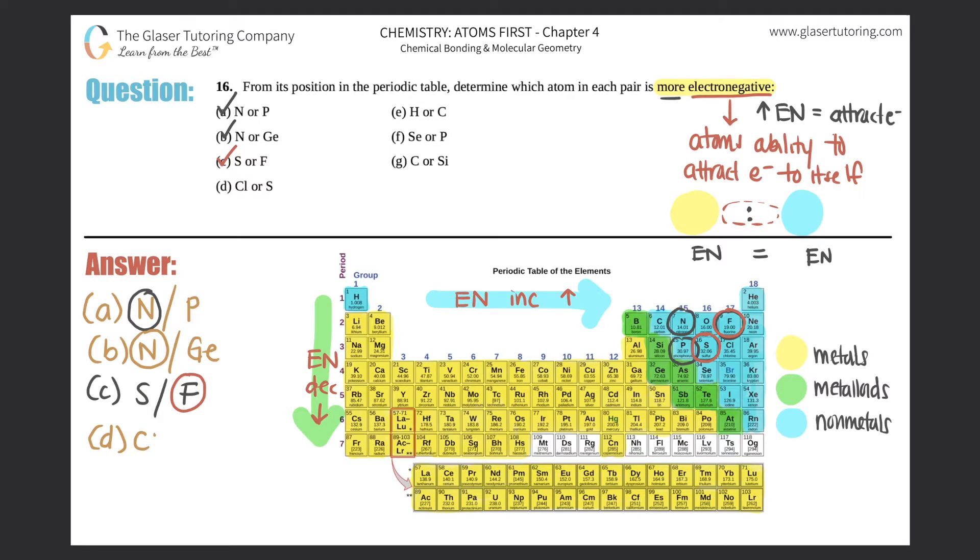D, chlorine or sulfur? Chlorine is over here. Sulfur is right next door to the left. As you go from left to right, electronegativity increases. So it would make sense that chlorine would be the more electronegative element. It would pull electrons. It would attract electrons more than sulfur would.